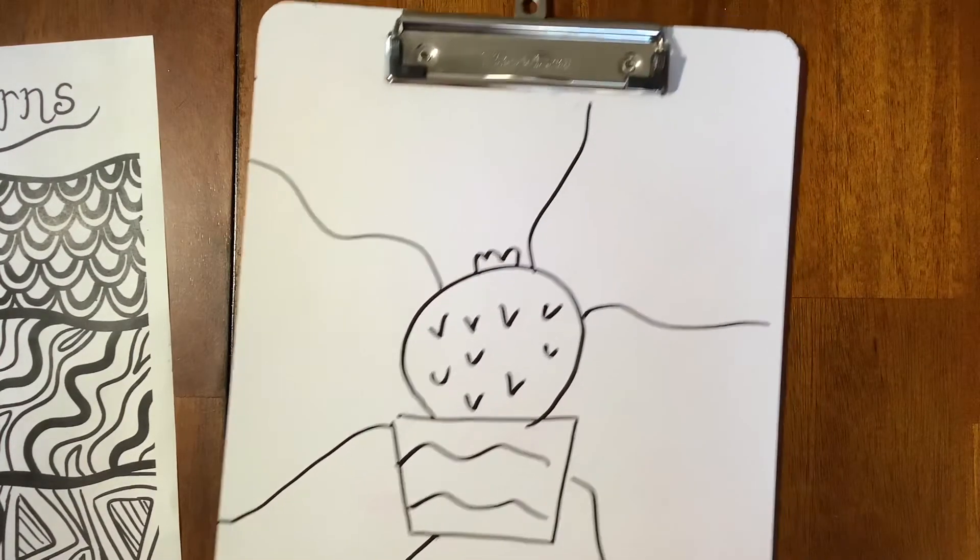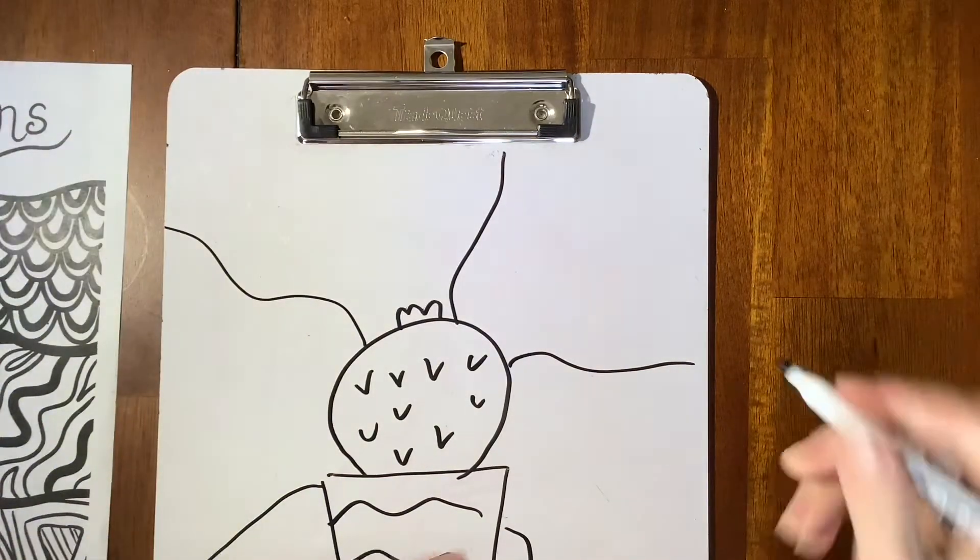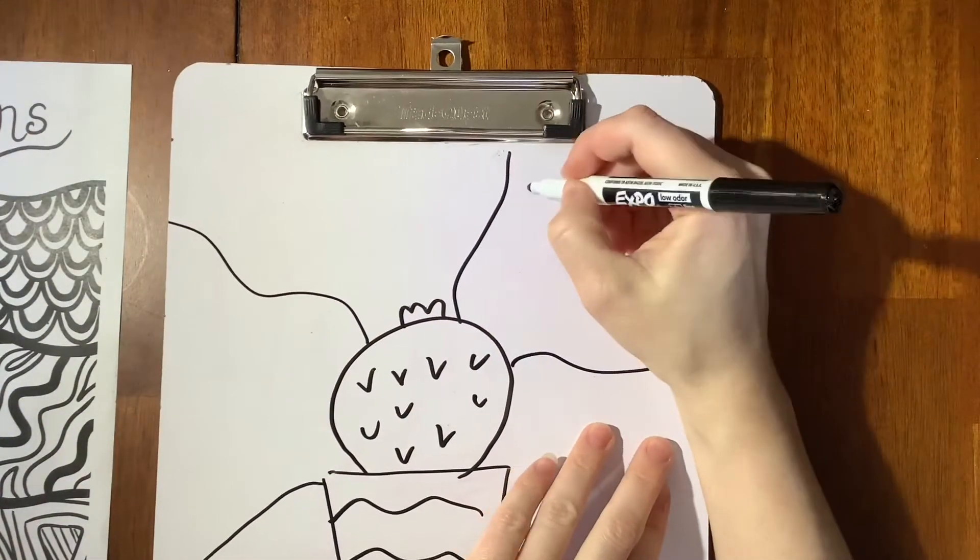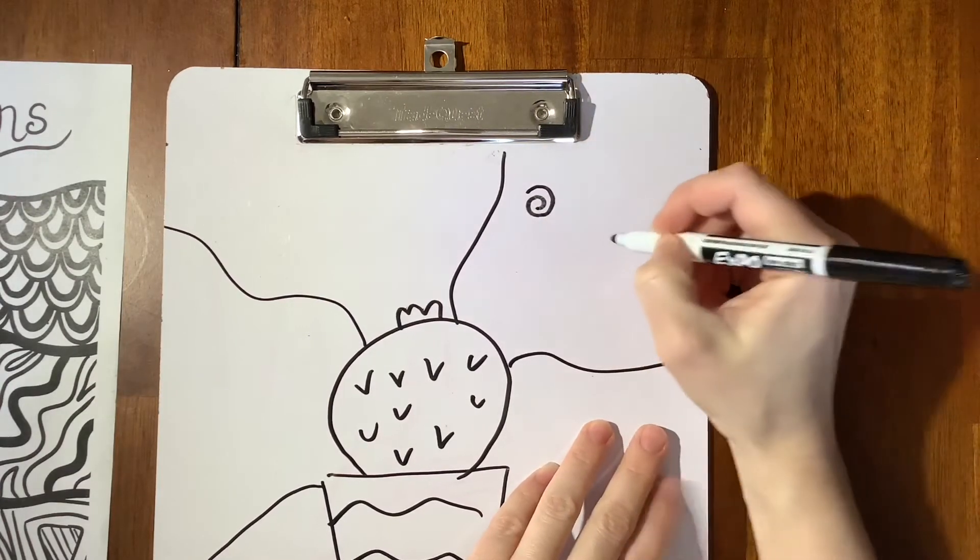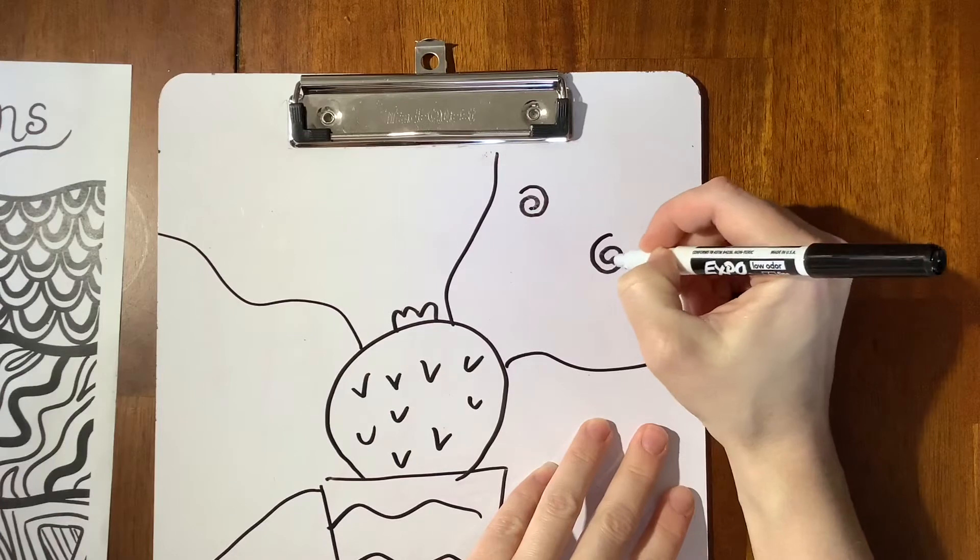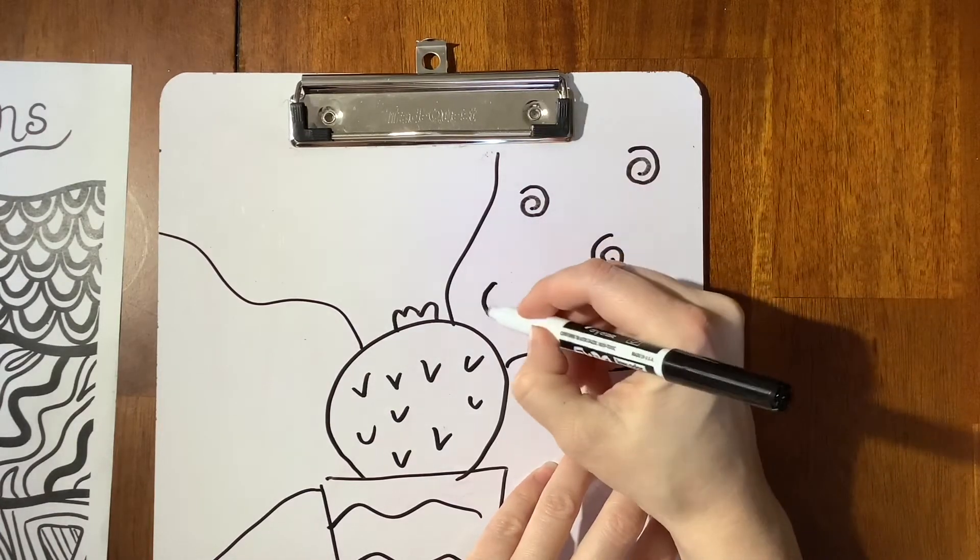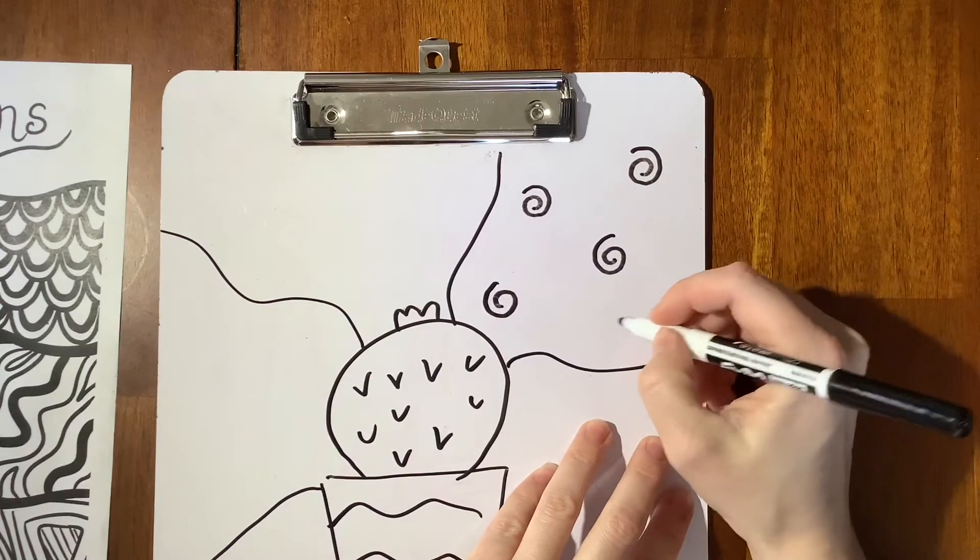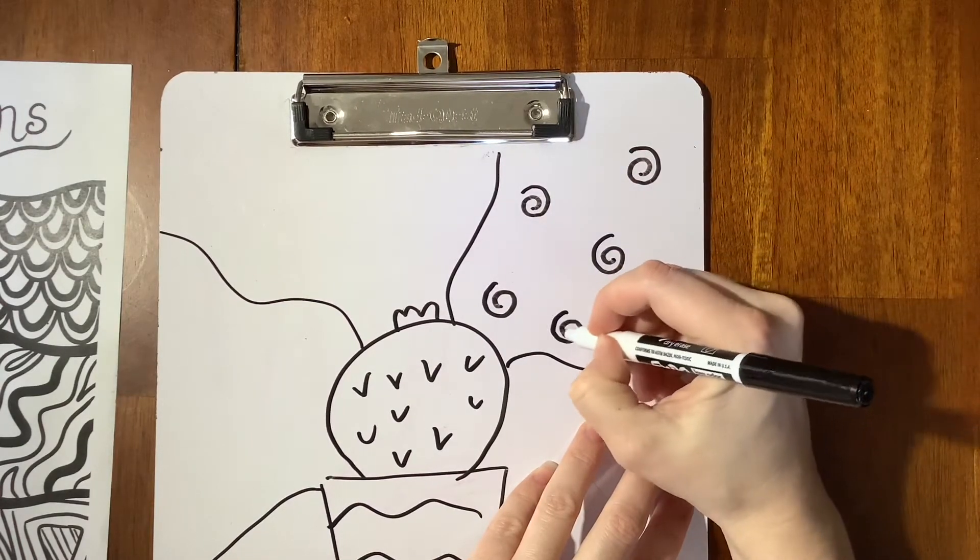So I'm going to go ahead and start my cinnamon rolls and I'm going to start with the swirls. So we start with just making random swirls around in this section and they can go either direction and you want to make a good amount.